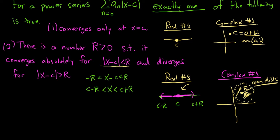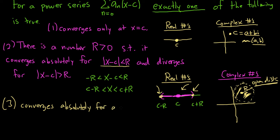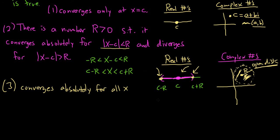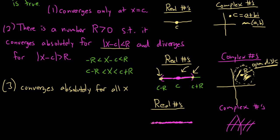It doesn't tell you what happens at the endpoints, so we'll often have to check those. Case three: it converges absolutely for all x. So for real numbers it's everywhere on the real line — the interval of convergence is all real numbers. For complex numbers it converges in the entire complex plane. So one of three things will happen: it converges only at the center, it converges in some open interval centered at c, or it converges everywhere.